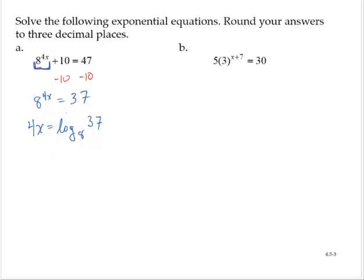Now, using the change of base rule, I can write that as 4x equals log 37 over log 8.